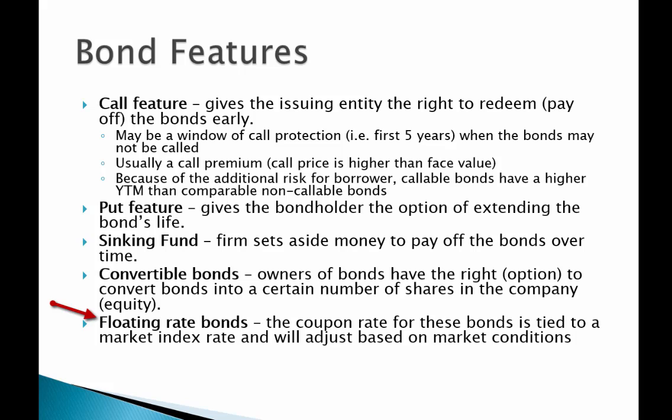Floating rate bonds are bonds where the coupon rate changes based on market conditions — it adjusts up or down based on an underlying index. For instance, if bonds are tied to the one-year constant treasury rate, as that rate moves up and down, the coupon rate adjusts accordingly. We'll stop here for this first video and pick up with some alternative bond types in the next video.